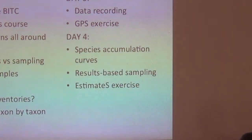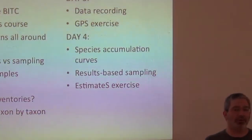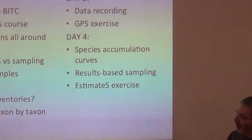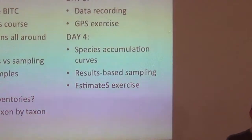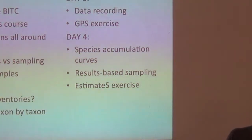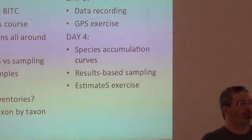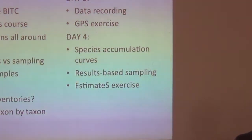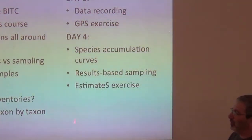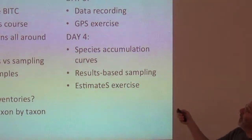Day two we're going to spend the morning talking science — why do you do these inventories, why are they interesting, why are they relevant. Then the afternoon is logistics: we split into our three groups — plants, birds, and herps — and each group talks through their equipment and their needs. There's a lot of things missing, so I'm sure there will be multiple trips to the market to get buckets or chairs or whatever. For birds we have a long list of things we need.